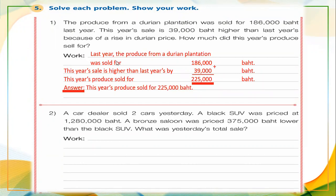So we have two numbers given to us. The first is last year's produce from a durian plantation, which was sold for one hundred eighty-six thousand baht. This year's sale is higher than last year by thirty-nine thousand baht. So we need to find this year's total sale by adding the two amounts.